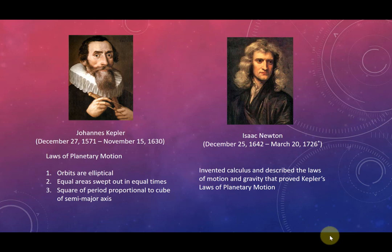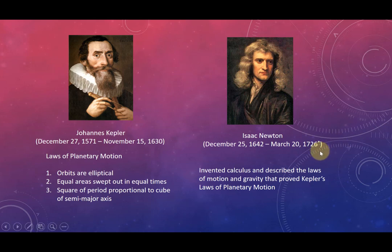Isaac Newton was born December 25, 1642, and lived to March 20, 1726 — with an asterisk, because the date depends on which calendar you're using. Among the many things Newton is famous for, he invented calculus and described the laws of motion and gravity that proved Kepler's laws of planetary motion. So Newton basically invented calculus to explain these laws of planetary motion — making it perfect to solve Kepler's equation with Newton's method.